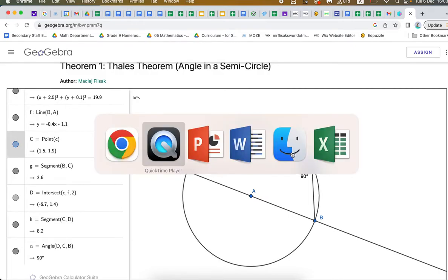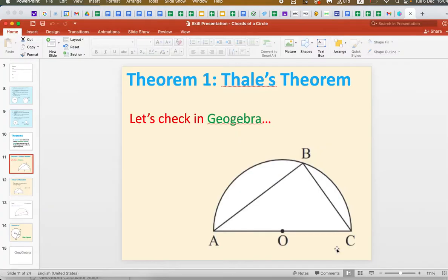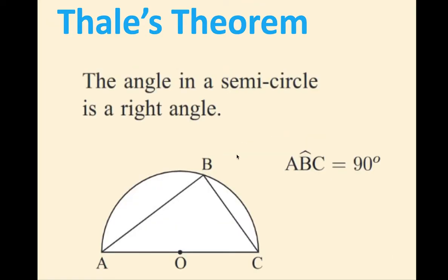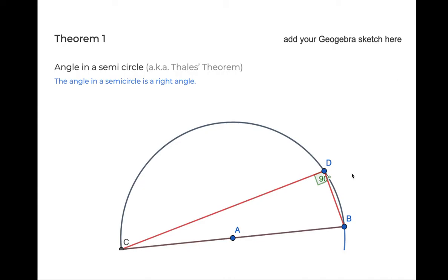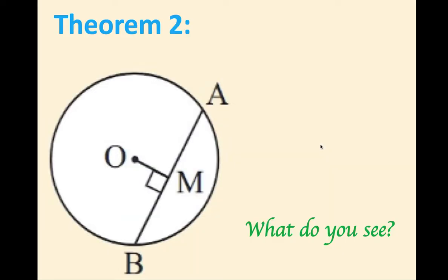Let's go on with our lesson for today looking at a new theorem. To recap: the angle in the semicircle is a right angle. So angle ABC — this middle letter is always the vertex of the angle — equals 90 degrees. You have added that to your study guide under theorem one, with the theorem and the diagram you created. Let's do that now with the second theorem.